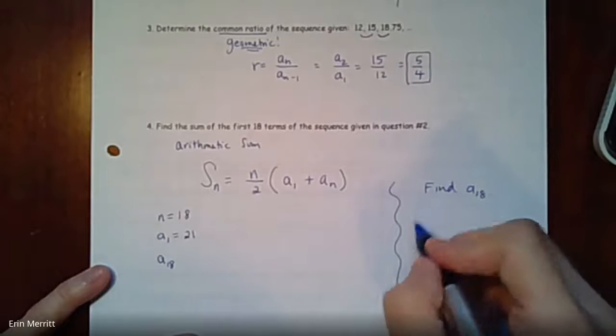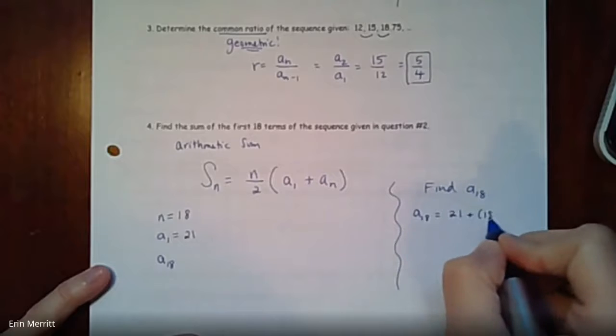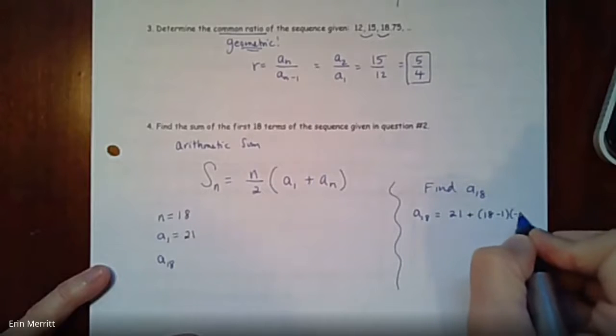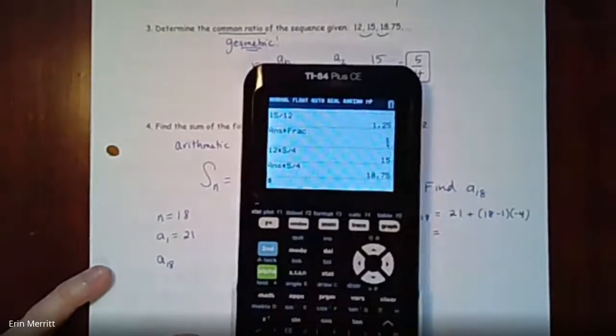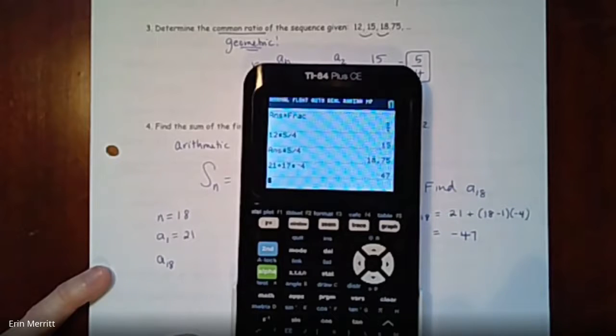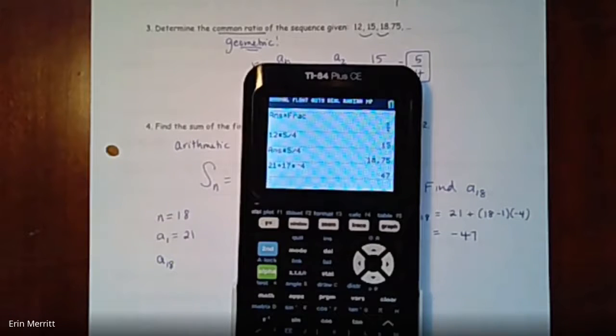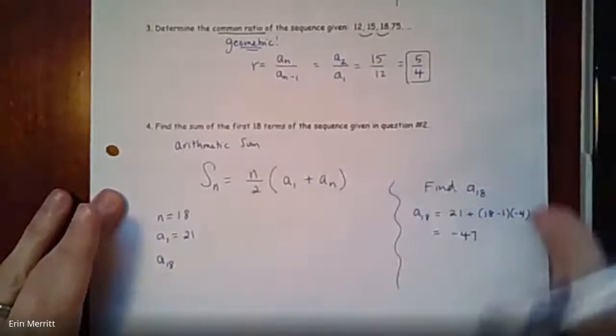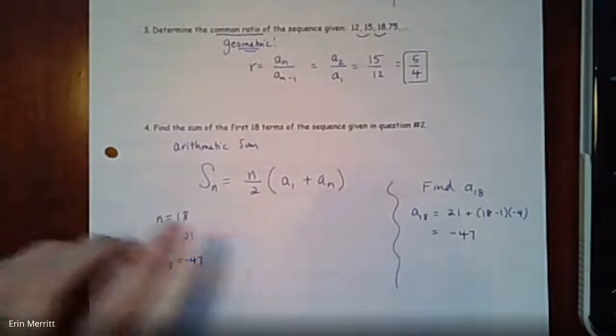We need to find a_18. The good thing is you wrote an explicit formula, so use it to find the 18th term. So 21 + (18-1) times that common difference of -4. You can plug right into your calculator: 21 plus - turns out to be 17 times -4 - and so we'd get -47. It makes sense that you're going to end up with a negative number for that 18th term.